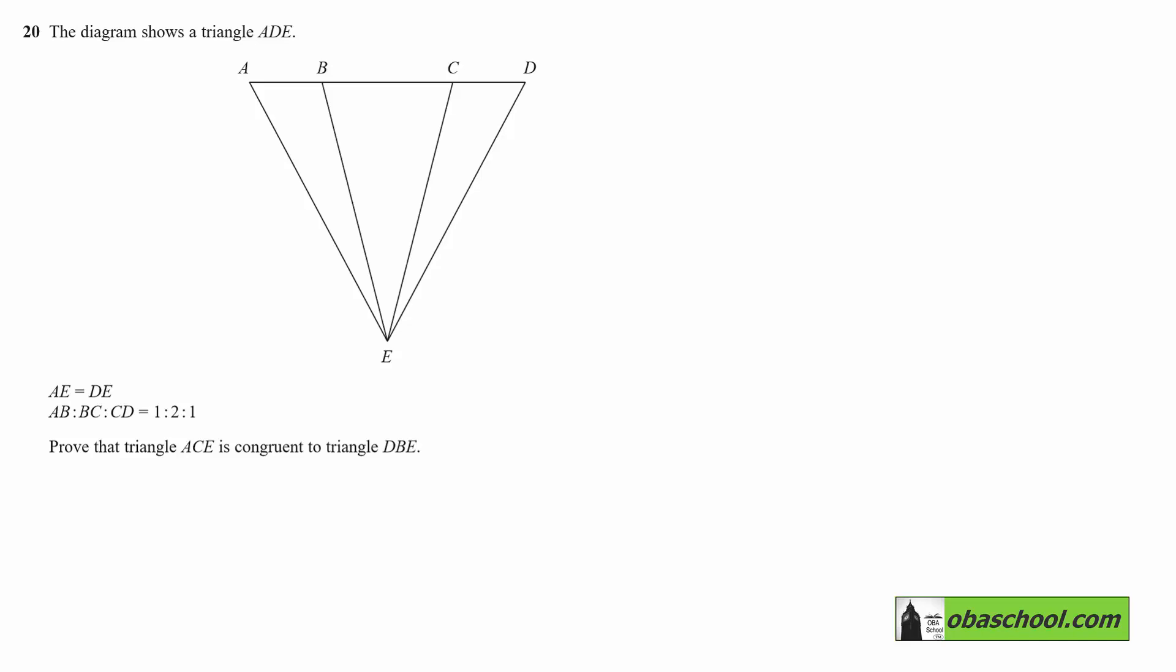The diagram shows a triangle ADE. AE is equal to DE, so these two sides are equal in length. AB to BC to CD is 1 to 2 to 1, so we could call these lengths 1, 2 and 1.